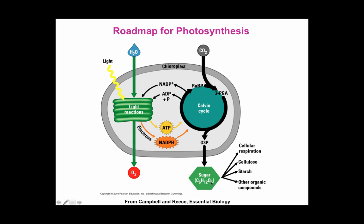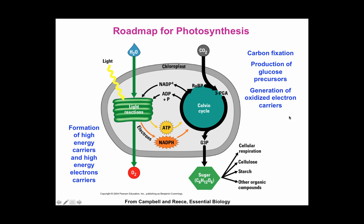The sugar generated at the end could be used by the plant cell or bacteria for cellular respiration, to produce cellulose for the cell wall, starch as a way to accumulate energy, and many other organic compounds. We'll have formation of high-energy carriers NADPH and ATP, and also glyceraldehyde-3-phosphate as an intermediate for glucose production, as well as the regeneration of ADP and NADP+ required for the light reactions to happen.